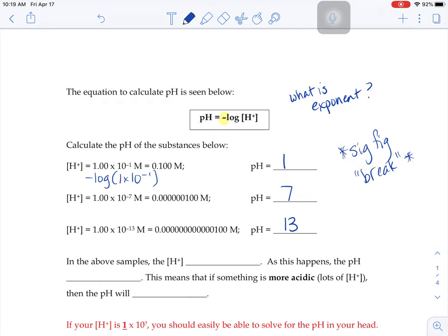So when you look at these samples here, the H+ ion concentration is decreasing. It's getting smaller and smaller and smaller. When we go from 1 times 10 to the negative 1, 1 times 10 to the negative 7, 1 times 10 to the negative 13. As that H+ is going down, our pH number is going up.